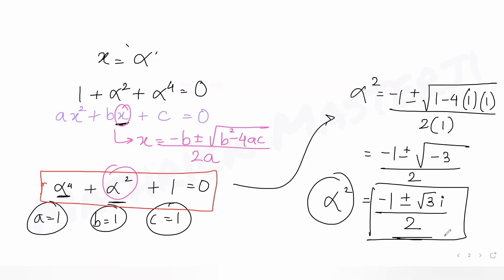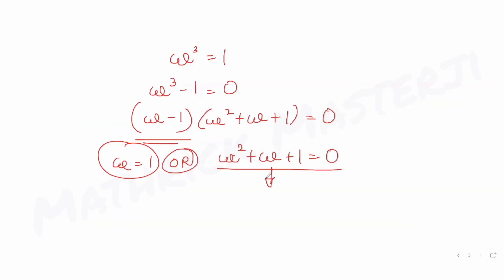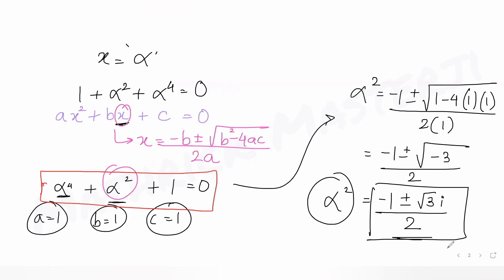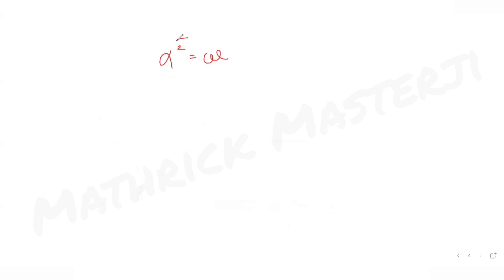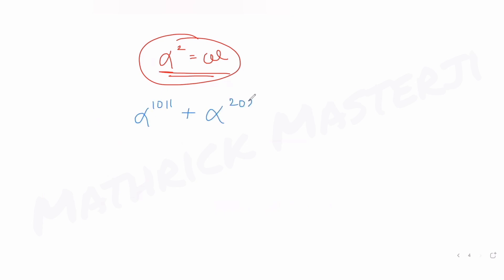Instead of α², we have omega. Solving with the formula also gives (-1 ± √3·i) / 2, the same roots as alpha squared. So alpha squared equals omega. Now let's solve the original expression α^1011 + α^2022 - α^3033.